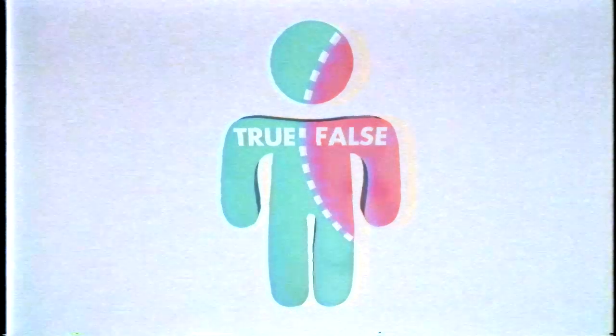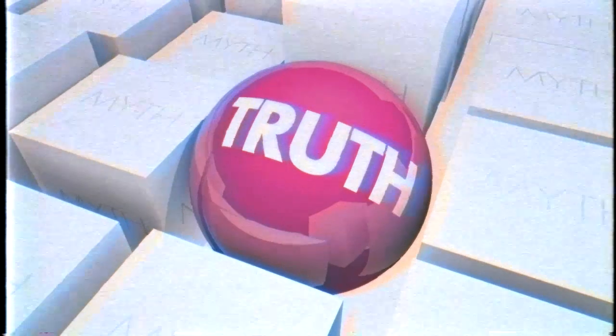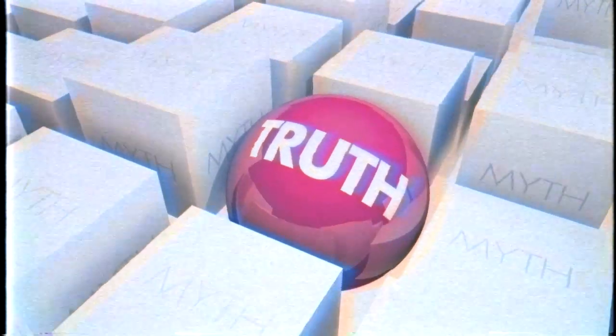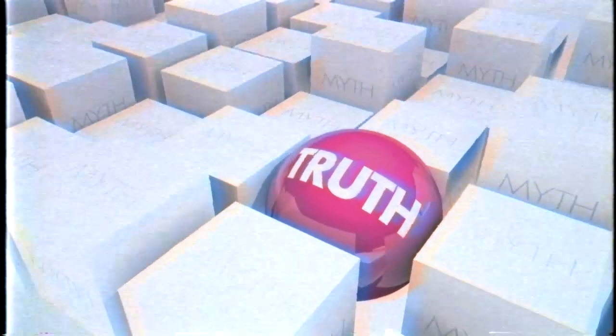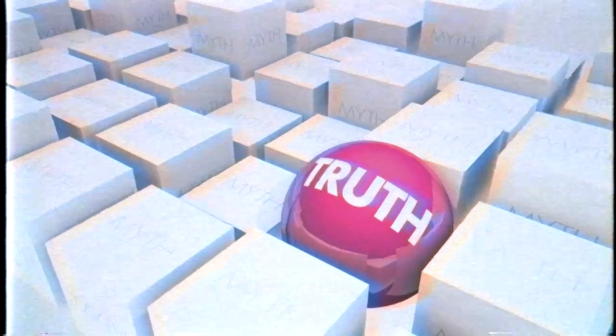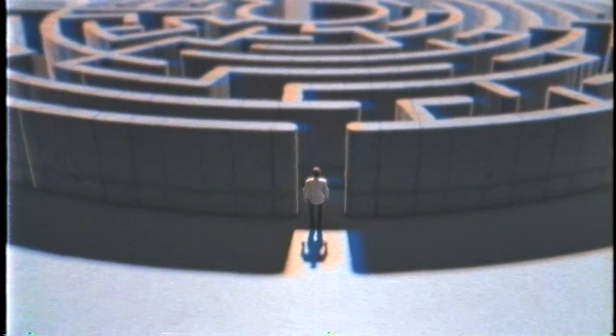For example, if you consciously assume something to be true, even though it may be false, your subconscious mind will accept it as true and proceed to bring about results which must necessarily follow because you consciously assumed it to be true.